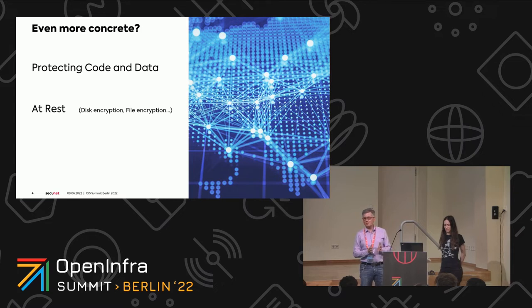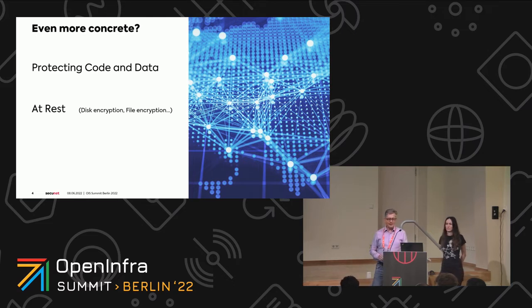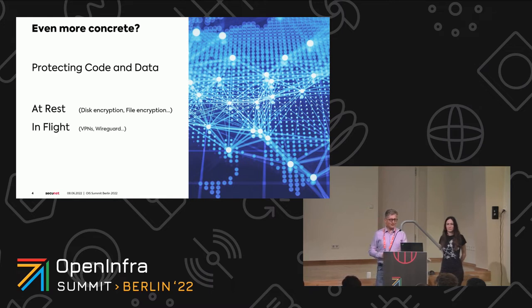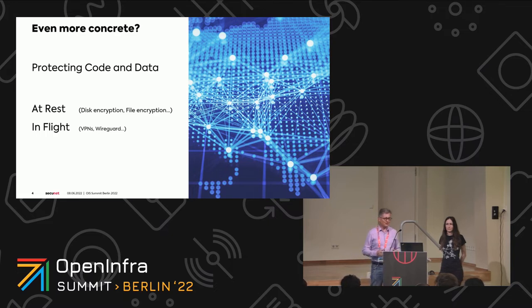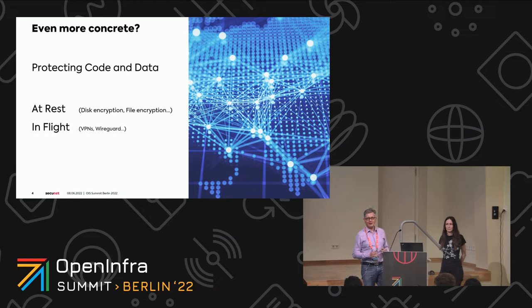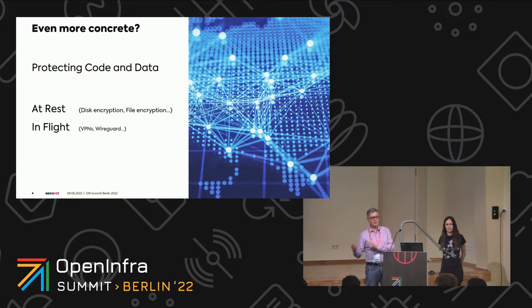We had in the past data-at-rest protection, and we still have it. We can protect data when it's stored on disk or on storage. There are means of encryption and integrity protection so that data is stored securely. We can also protect data in flight — when it's transmitted over the internet in different ways.